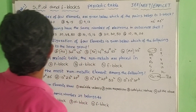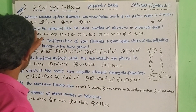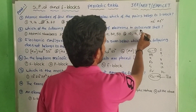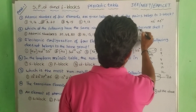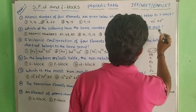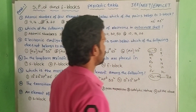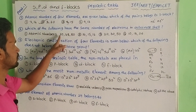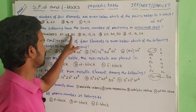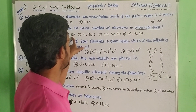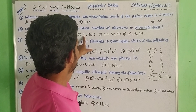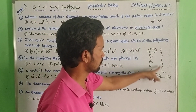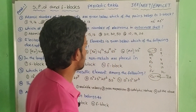Next question: which of the following have the same number of electrons in the outermost shell? The atomic numbers given are 30, 48, 50, 18, 14, 15, and 16. These numbers are easy to analyze.